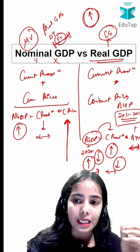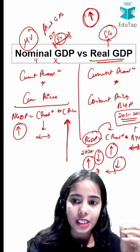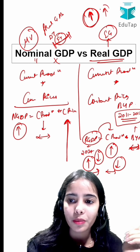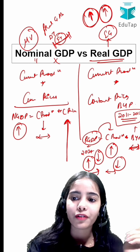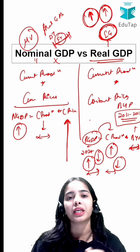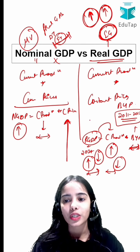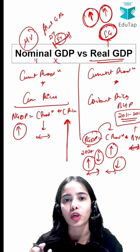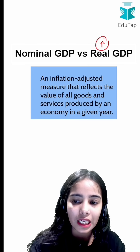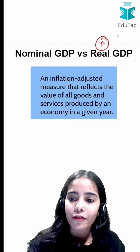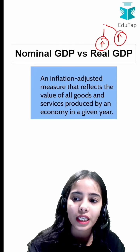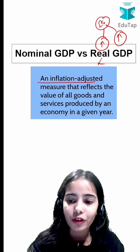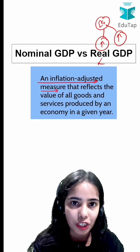When current production is increasing as compared to the previous year, real GDP will increase and it will show that economic growth is happening in the country. That's why real GDP is considered a better measure of economic growth — it increases only when production is increasing. Real GDP is an inflation-adjusted measure and therefore a better indicator of actual economic growth.